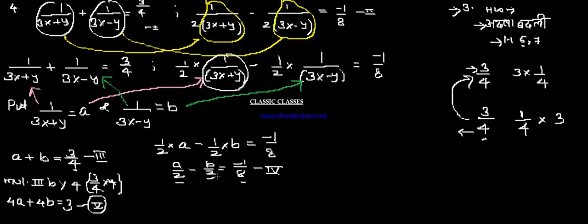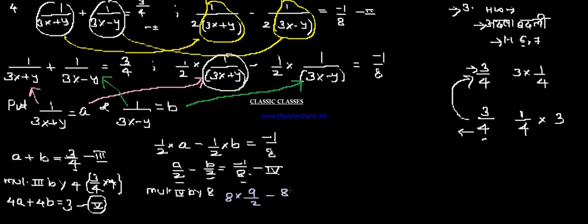Now multiply equation number 4 by 8. We get 8 into a by 2, minus 8 into b by 2, equals 8 into minus 1 by 8. The 2s cancel to give 4a, and 4b, and the 8 and 8 cancel. So the answer becomes 4a minus 4b equals minus 1 — equation number 6.